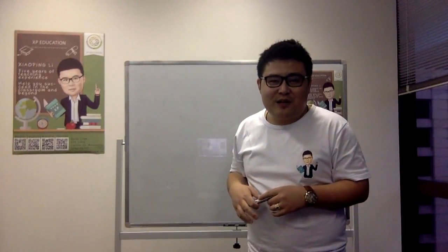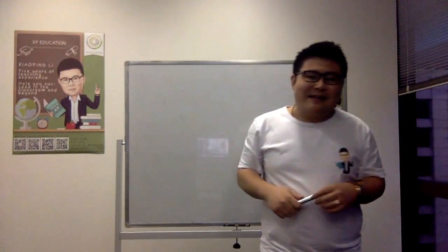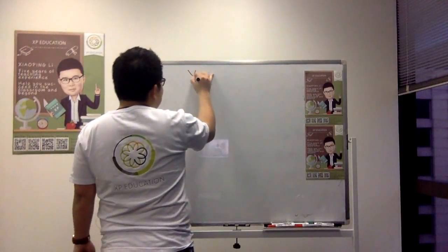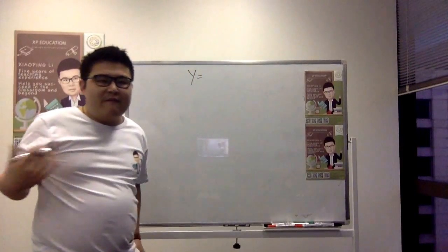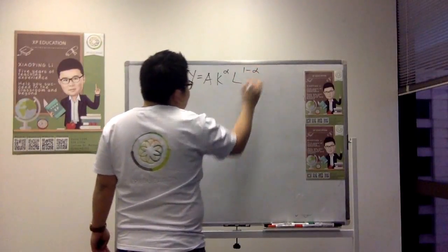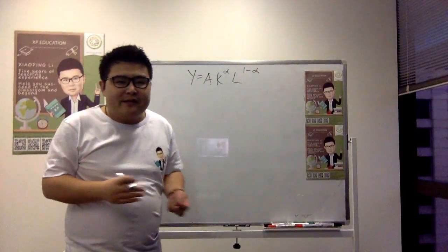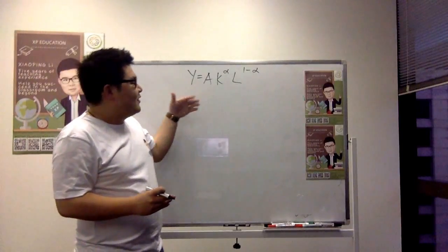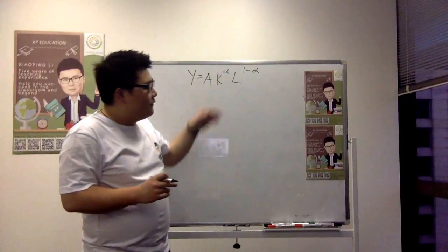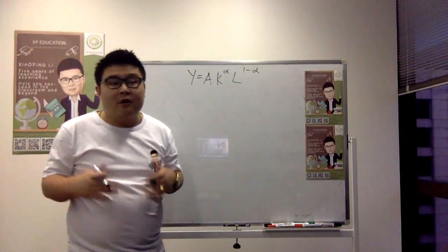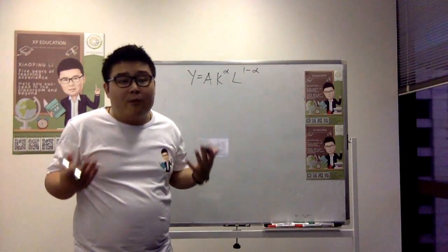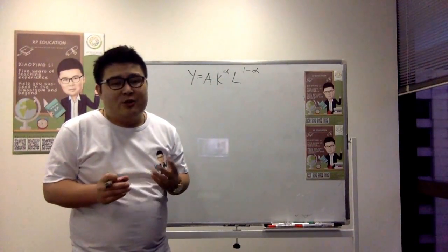I apologise for not looking professional with a suit. So, how exactly do we characterise the Solow-Swan model? First of all, we have to use what we call the Cobb-Douglas production function: Y = AK^α L^(1-α). Output is equal to A, which is a technological factor; K is capital; L is labour. Alpha is the proportion of income allocated to capital, and 1 minus alpha is the proportion allocated to labour.